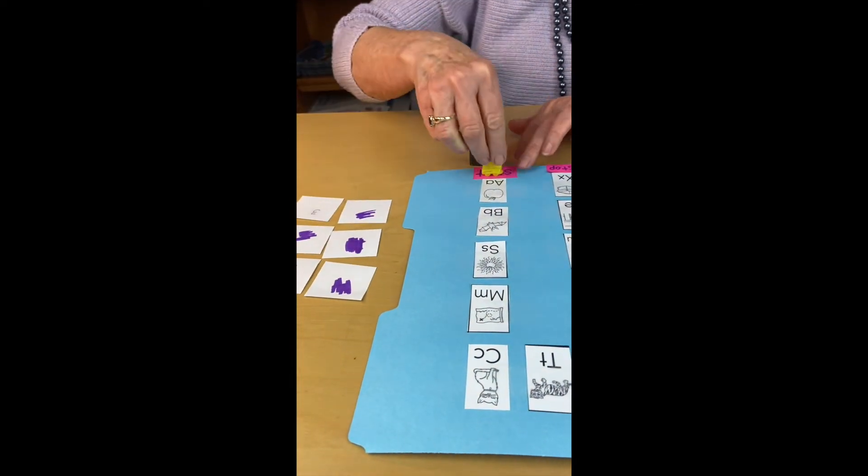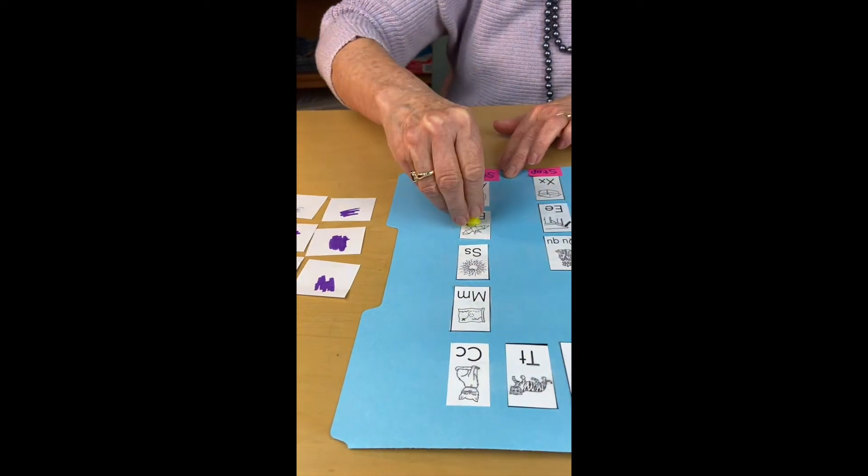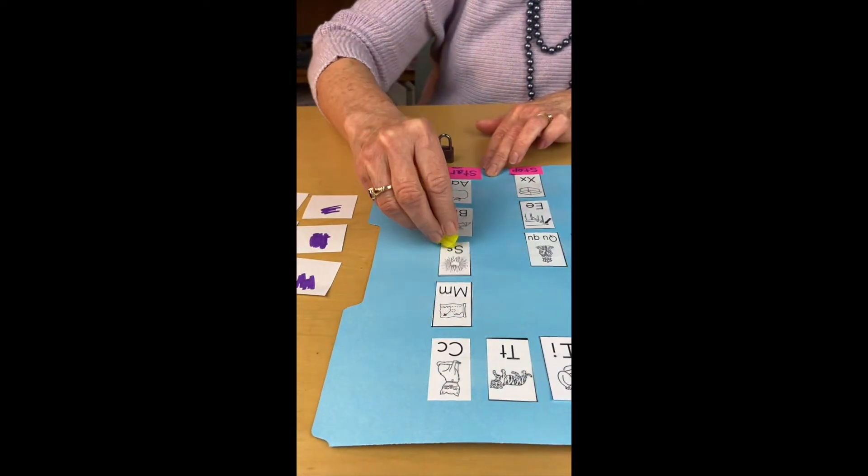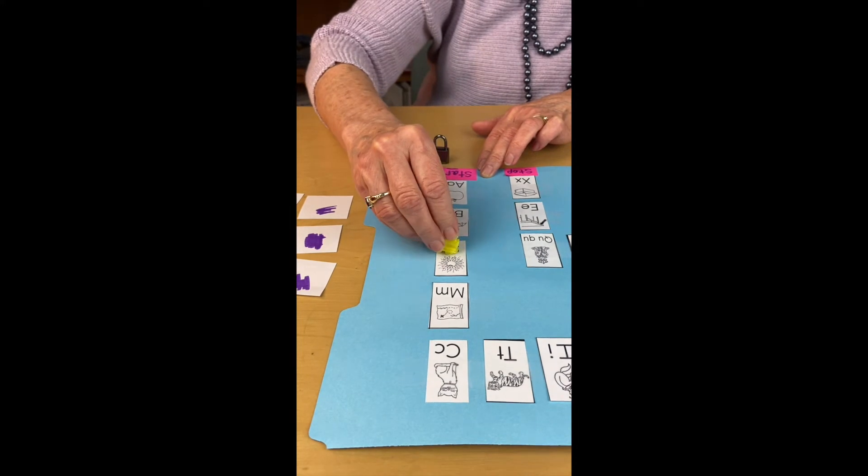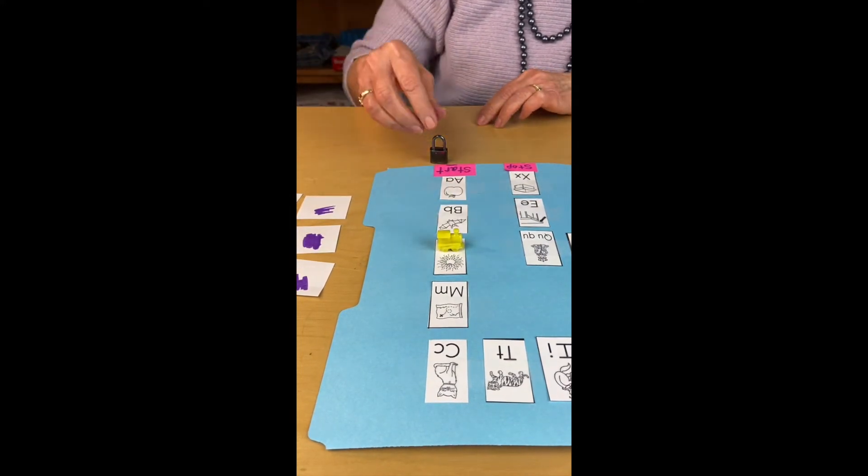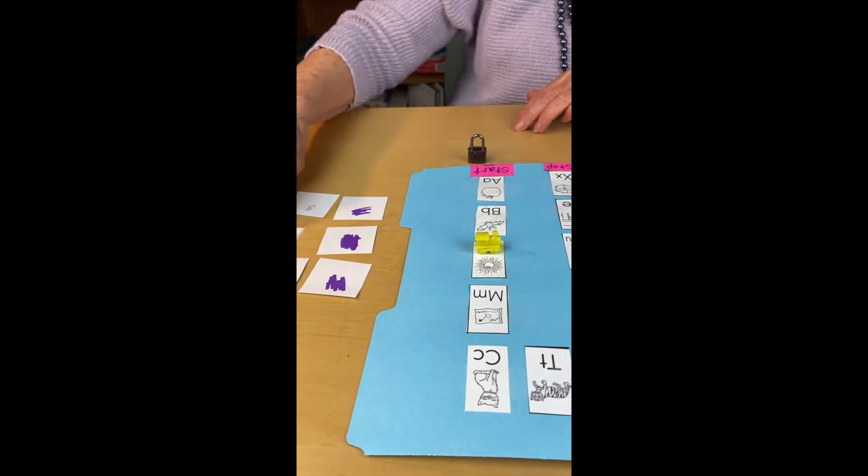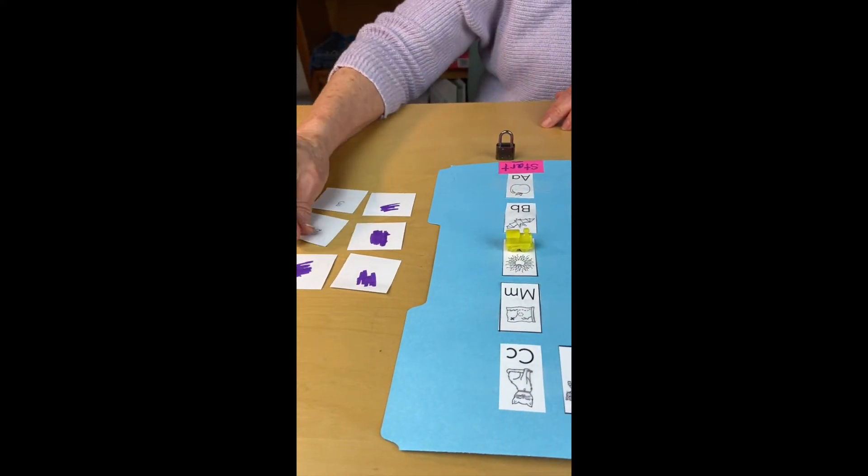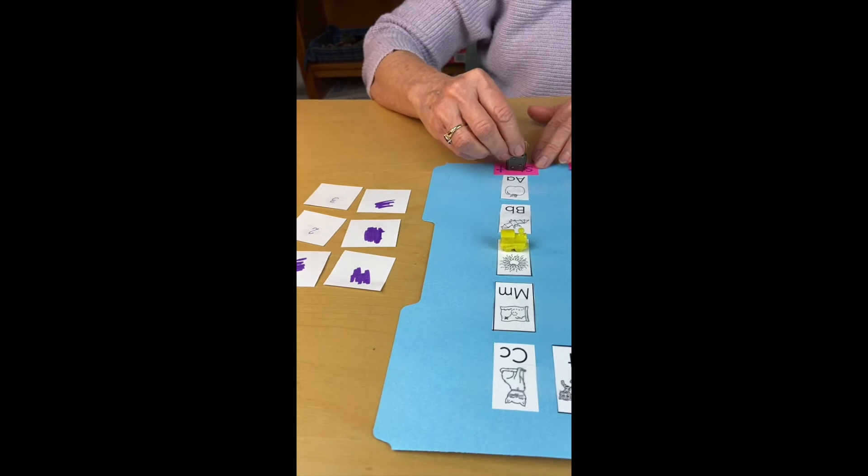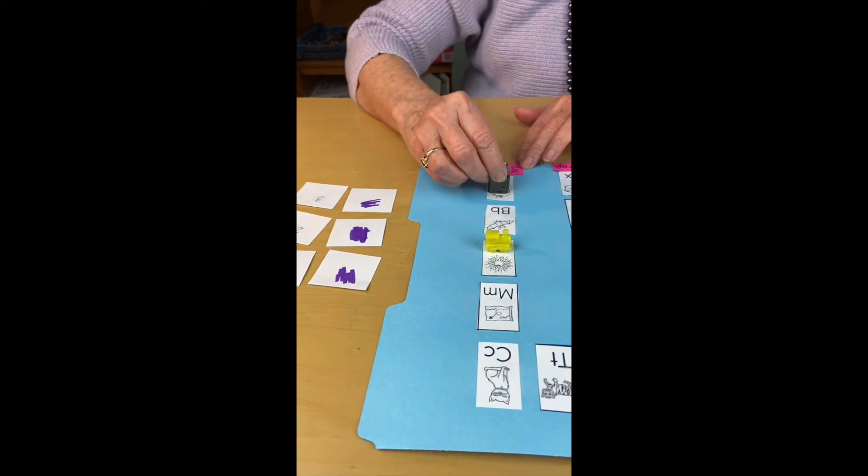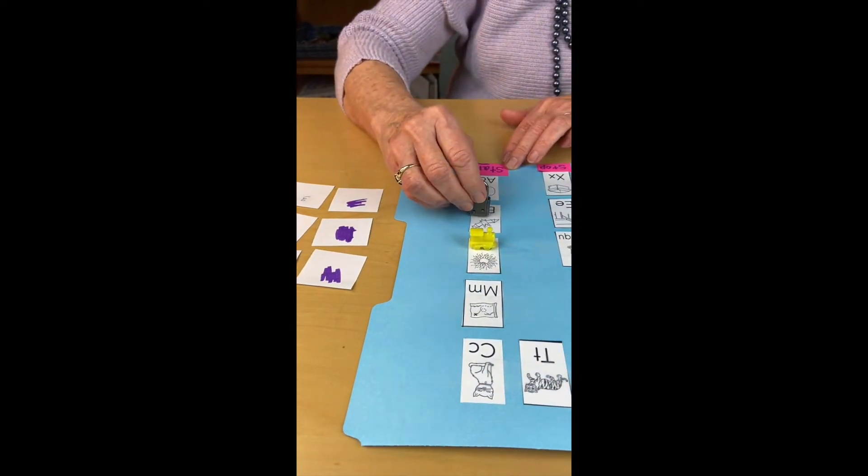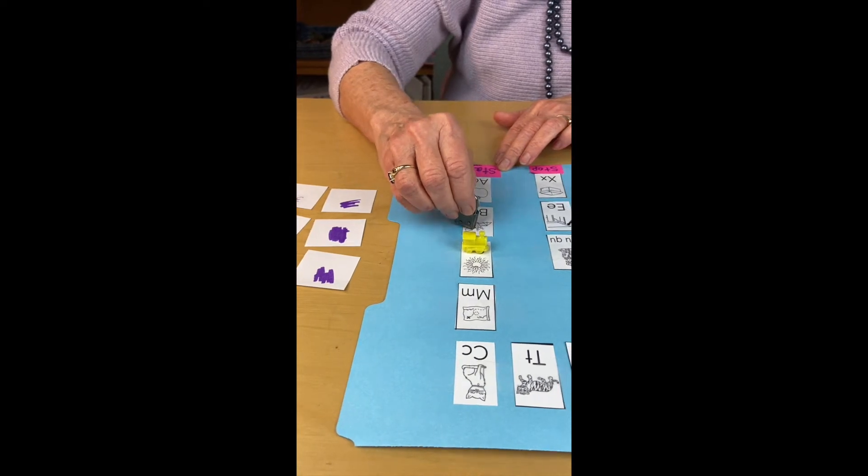Three. One hop, two hops, three hops. S, sun, s. Now my friend plays. Two. One hop, two hops. B, bat, buh.